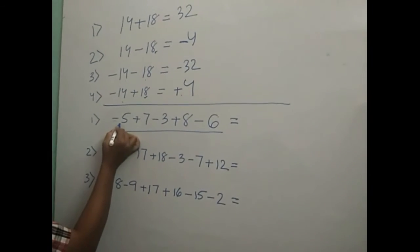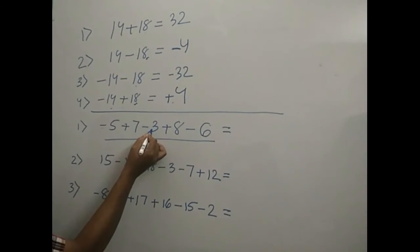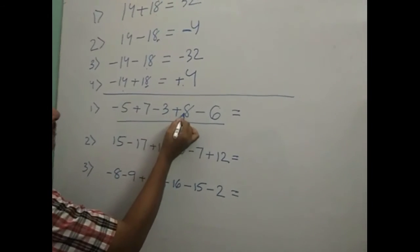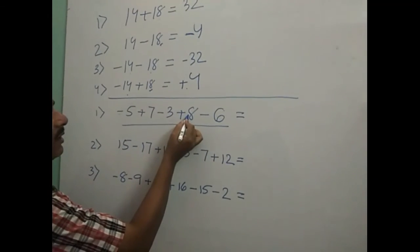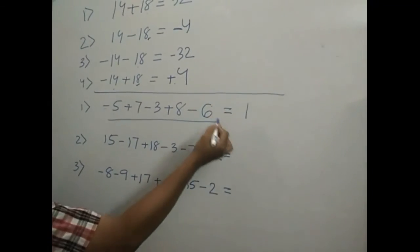Minus 5 plus 7 is equal to 2. 2 minus 3 is equal to minus 1. Minus 1 plus 8 is equal to 7. Plus 7 minus 6 is equal to 1. Easily write 1.